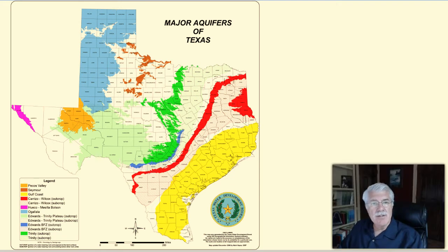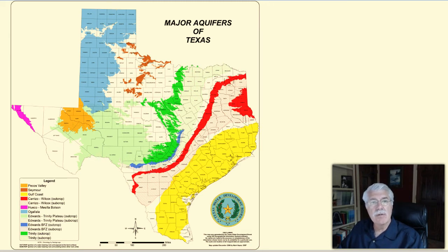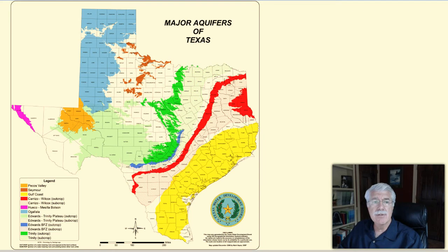This is the largest aquifer in the entire United States. The Ogallala stretches from South Dakota southward into Texas and underlies much of the Texas High Plains region. This aquifer's thickness averages 95 feet, although it can be over 800 feet thick in some places.